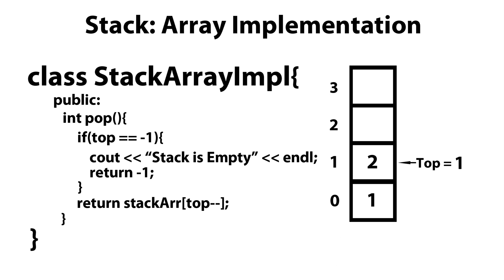Now let's move on to the pop method. The pop method is going to return whatever is on top of the stack — in our case it's of type int. The first thing we should do is check whether or not the stack is empty. Remember, in our one argument constructor we initialize top to minus one. So if top is equal to minus one, we print that the stack is empty and return minus one. Otherwise, we return whatever is at the top and then post-decrement top.